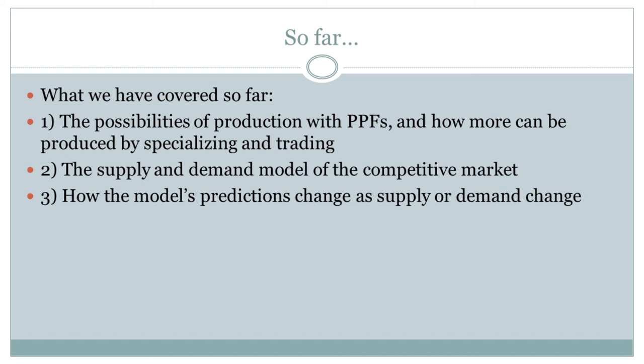This told us about the aspects of production and how different people can come together to produce useful things and trade with each other. We also talked about the supply and demand model of the competitive market — how you can take those goods produced in processes the production possibility frontier describes, sell them in the market, and talk about how that market comes together as a bunch of consumers and producers, getting an equilibrium price and quantity.